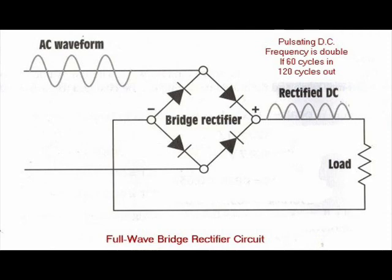And this delivers this pulsating DC to the load, in this case a resistive load. Also to note that the frequency will double. If there is a 60 hertz input frequency, the new frequency will be 120 hertz.